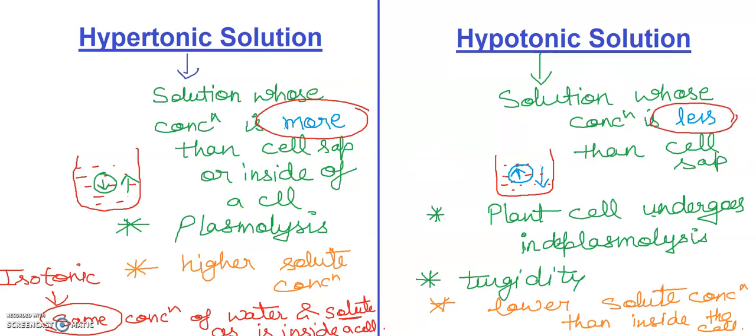I hope students find this video useful and that you have understood these points. In the next video, we will discuss turgor pressure, osmotic pressure, root pressure, and also turgidity and flaccidity. After that, we will discuss the next chapter — the transpiration process. Keep up your preparation and be alert for your exams.